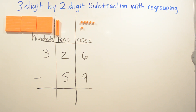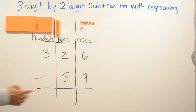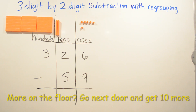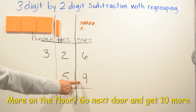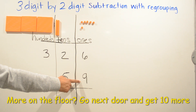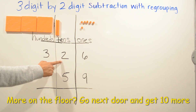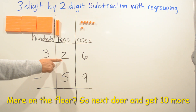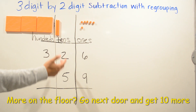We are now doing 326 minus 59. Remember: if there's more on the floor, go next door and get ten more.